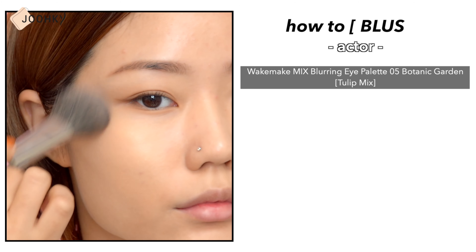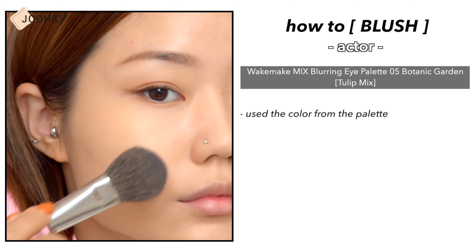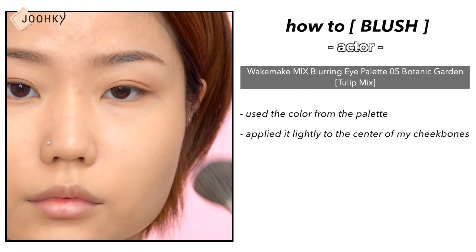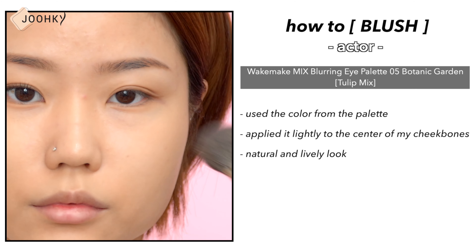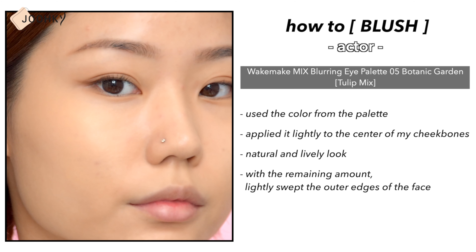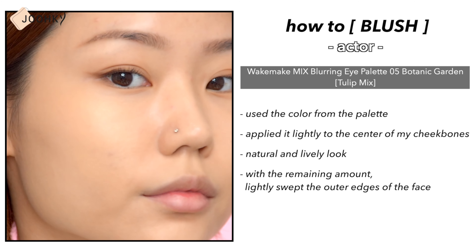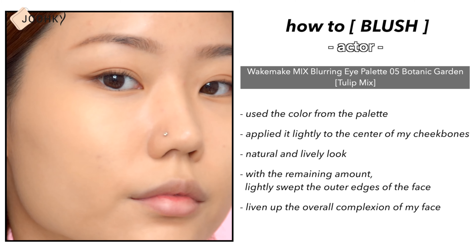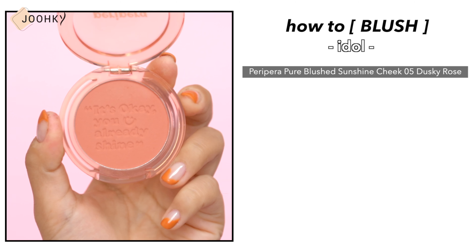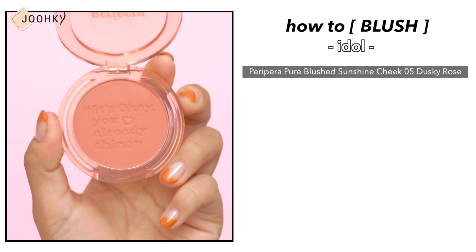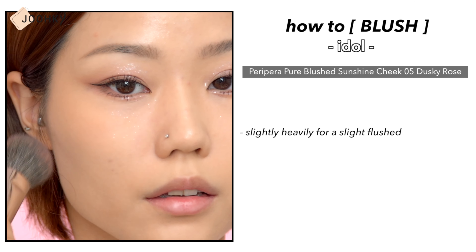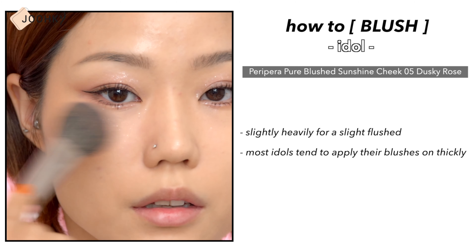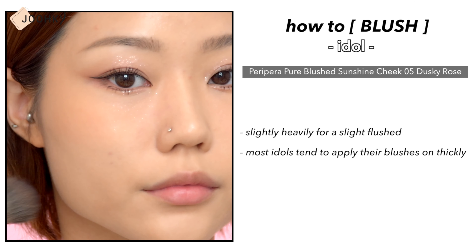Now I'm gonna add some blush. For the actor makeup, I used the color from the eye makeup palette to do the blush, applying it lightly to the center of my cheekbones for a natural and lively look. With the remaining amount on the brush, I lightly swept the outer edges of the face to liven up the overall complexion. For idol makeup, I used Peripera's Pure Blush Sunshine Cheek No. 5 Dusky Rose, applying it slightly heavily for a flush effect. The lighting on stage tends to be quite strong, so most idols apply their blush on thickly.